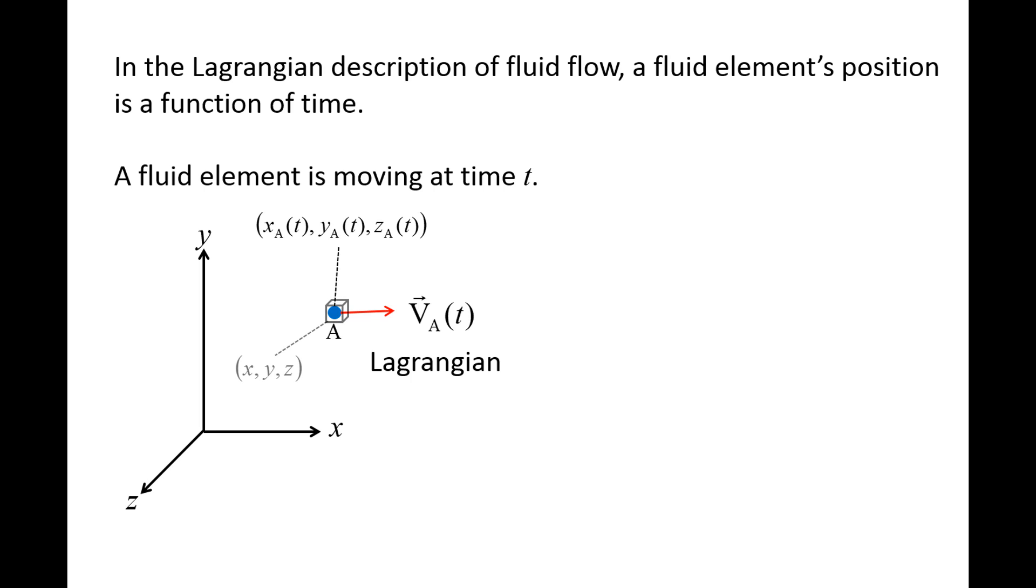Now, let's imagine someone is taking the Eulerian point of view and observing a specific location in space, which we will label x, y, and z. At this moment in time, both x, y, and z and xa, ya, za happen to coincide with each other.